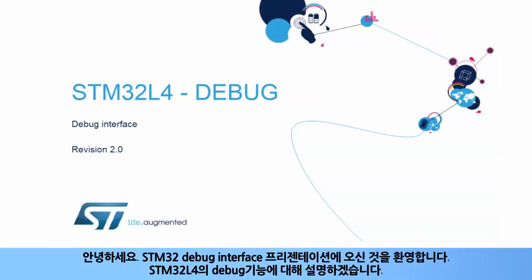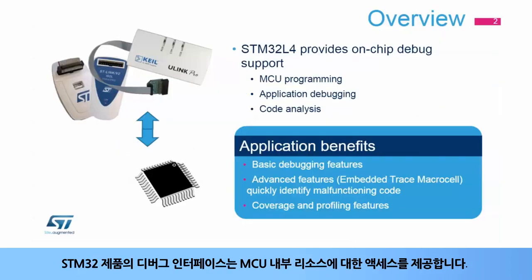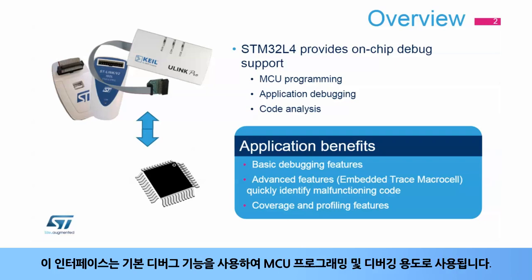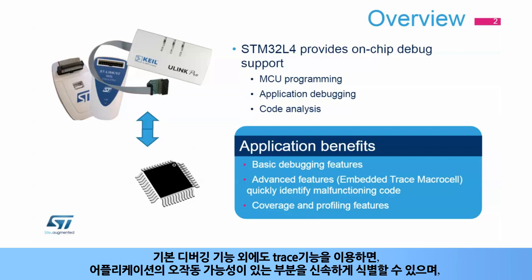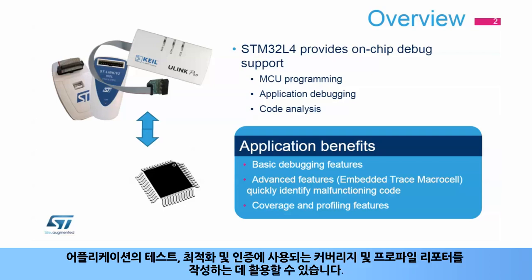Hello and welcome to this presentation of the STM32 debug interface. It covers the debug capabilities offered by STM32L4 devices. The debug interface of STM32 products provides access to MCU internal resources. This interface is used to program the MCU and debug applications using basic debug features. In addition, applications benefit from the trace capability used to quickly identify possible malfunctioning parts of the application and to create coverage and profiling reports used for application tests, optimizations, and certifications.